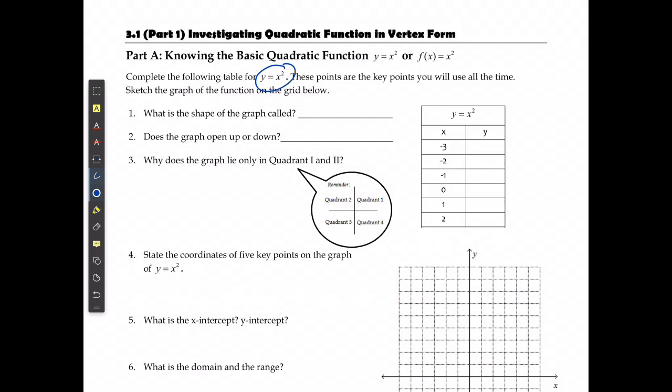So, first we're going to fill in the chart. If I said that y is equal to x squared, negative 3 squared would be positive 9, negative 2 squared would be 4, negative 1 squared is 1, 0 squared is 0, 1 squared is 1, and 2 squared is 4.